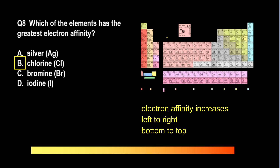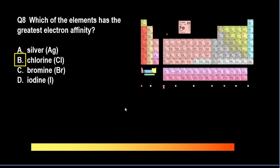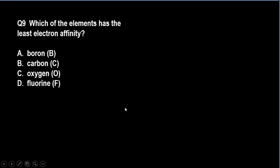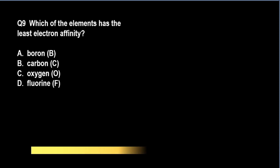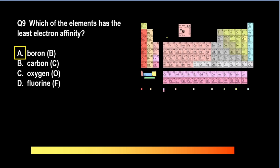Meanwhile, lithium for instance would not want to gain electrons — in fact, it would rather lose its electrons. Which of the elements has the least electron affinity? A. Boron, B. Carbon, C. Oxygen, D. Fluorine. The correct answer is A — boron would have the least electron affinity. Remember the trend: electron affinity increases as we move from left to right of a row or period.